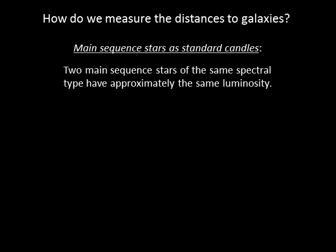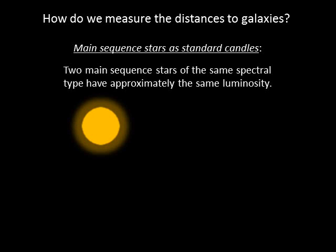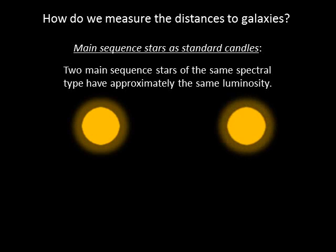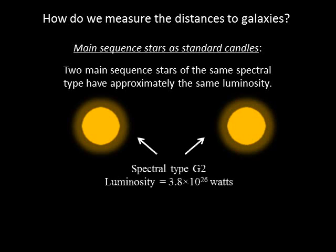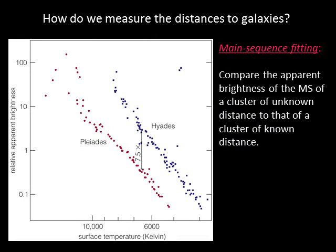A main sequence star is one example of a standard candle. Consider our sun — any star that is also a main sequence star with the same spectral type, G2, should have about the same luminosity as the sun. We can measure the star's apparent brightness and then use the inverse square law to calculate its distance. Because we can infer the luminosity of a main sequence star of a particular temperature, we can use a technique called main sequence fitting to measure the distance to star clusters that are too far to measure with parallax.